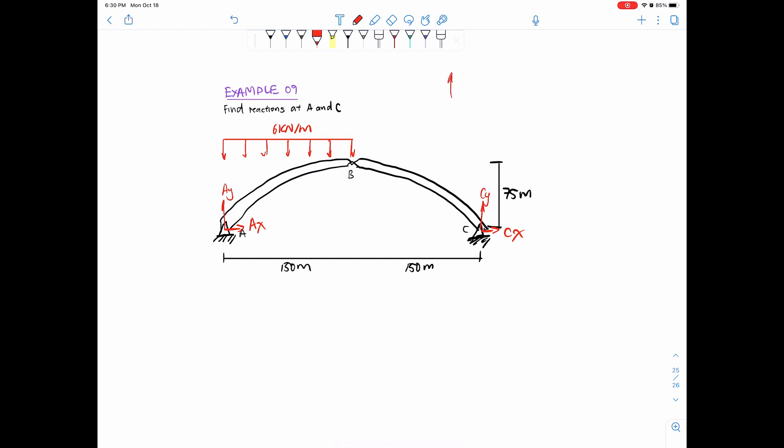We're just assuming that upwards is positive, to the right is positive, you can assume it any other way. So once we have that, we have three equations for four variables right now, we can't really solve that, right?